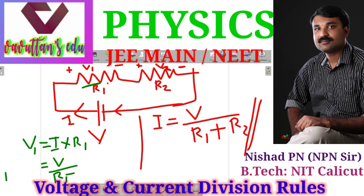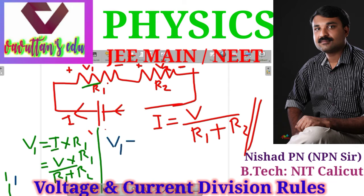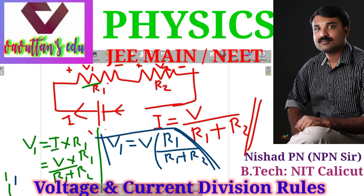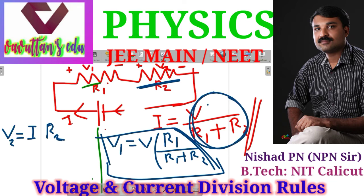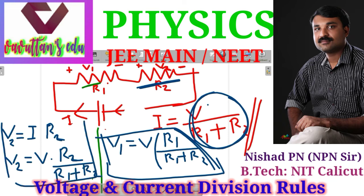V1 equals V divided by R1 plus R2, multiplied by R1. So V1, the voltage across R1, is equal to source voltage V multiplied by R1 divided by R1 plus R2. That is the total resistance formula for calculating V1. For V2, we can write V2 is equal to current I into R2. Current I equals V divided by R1 plus R2.